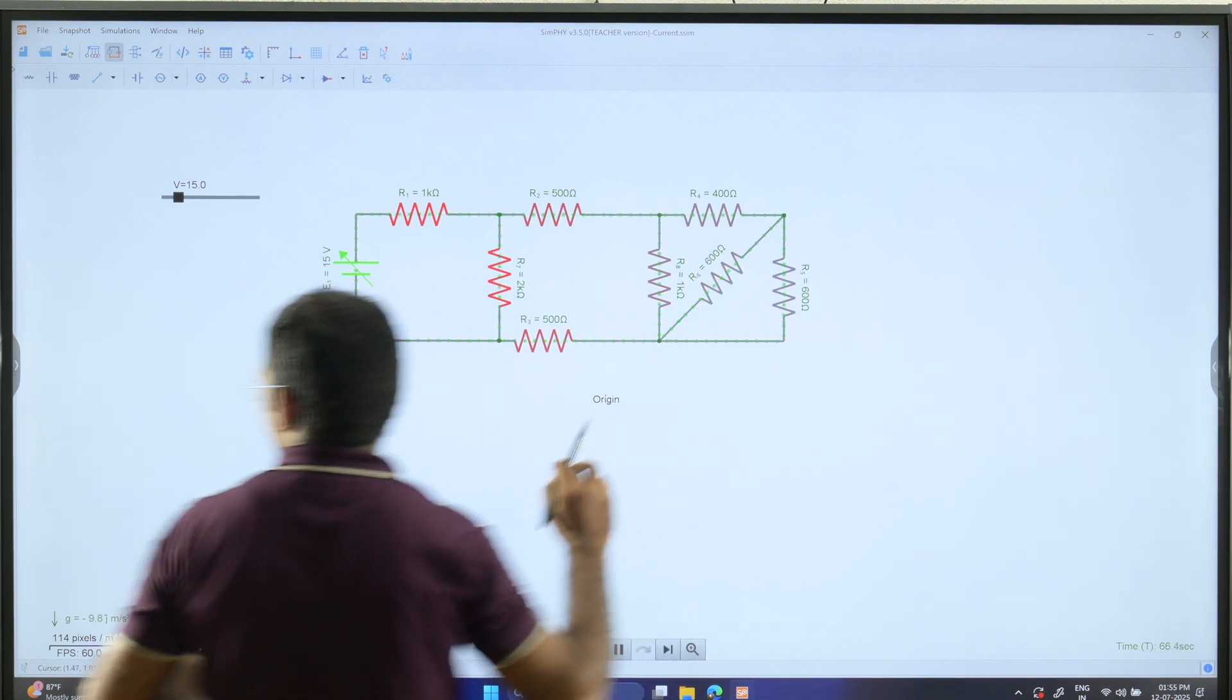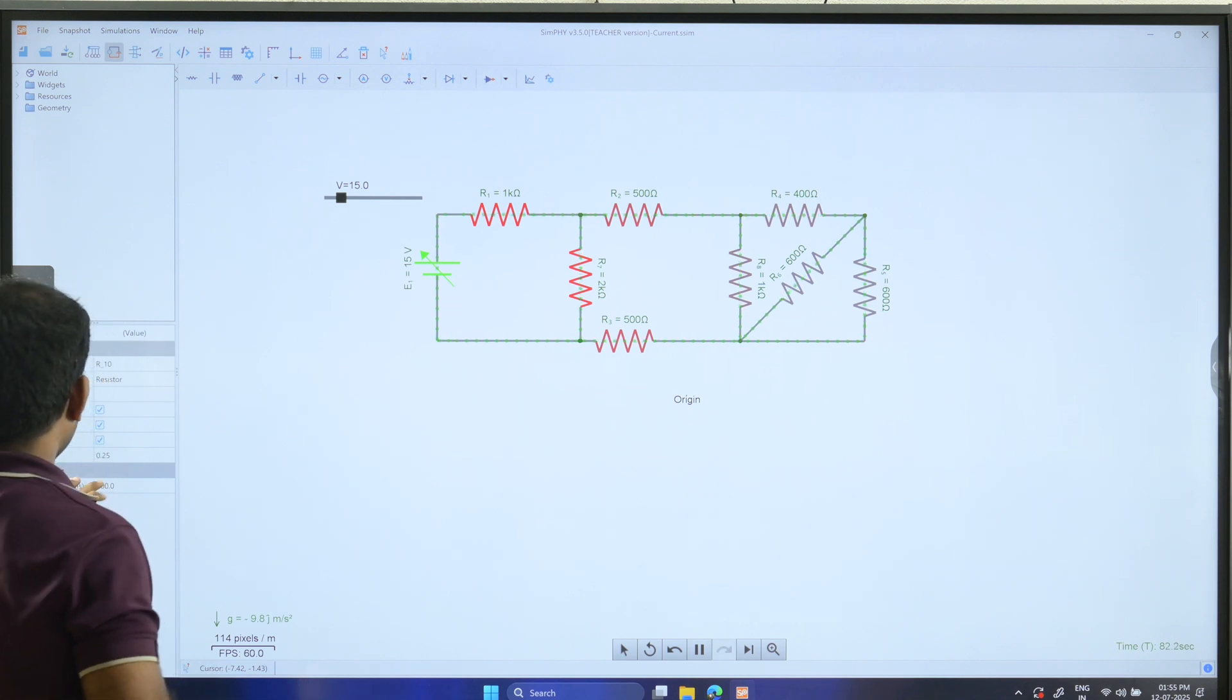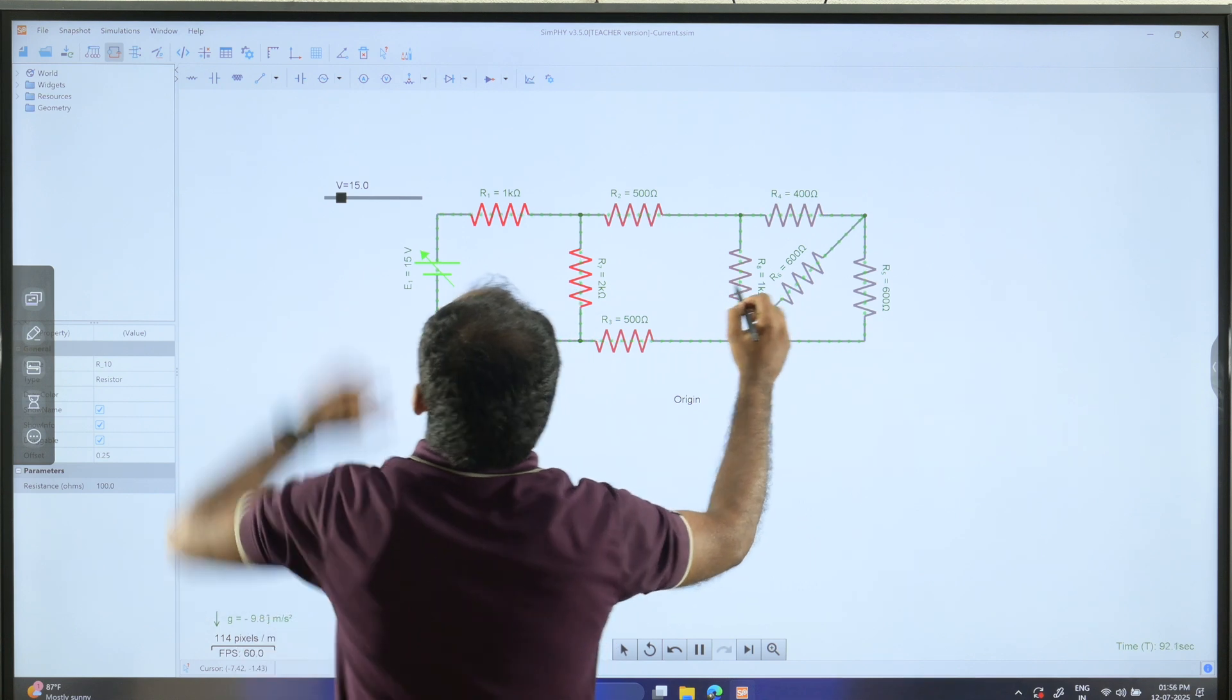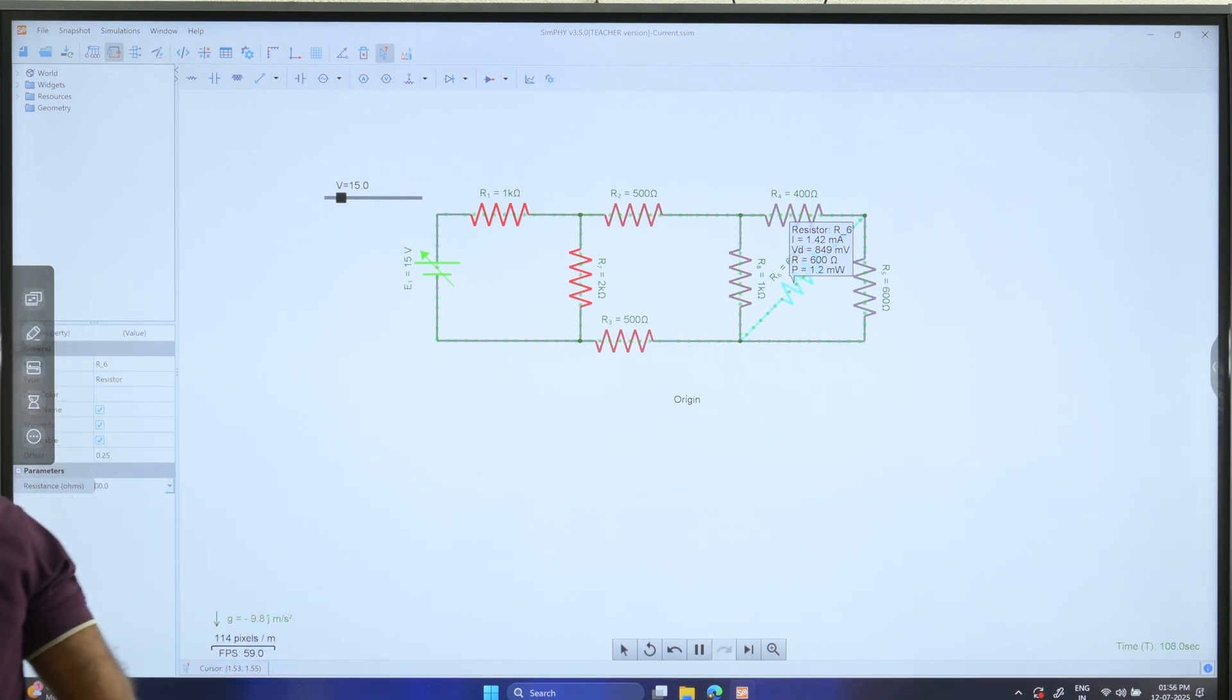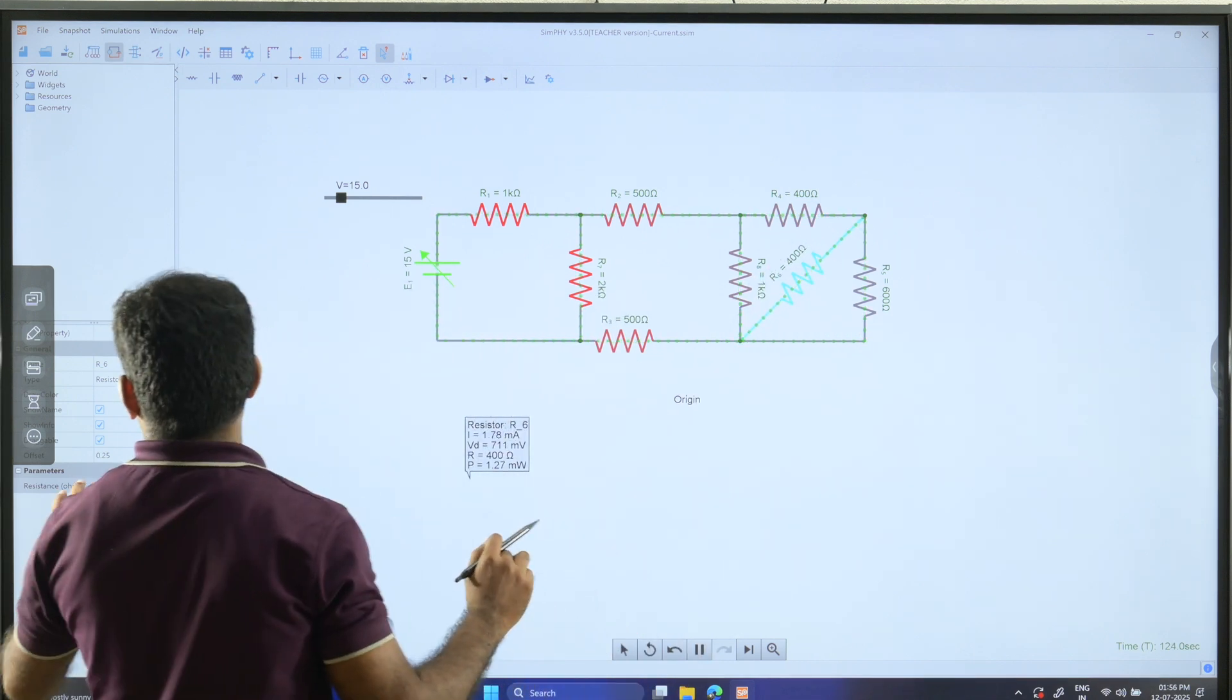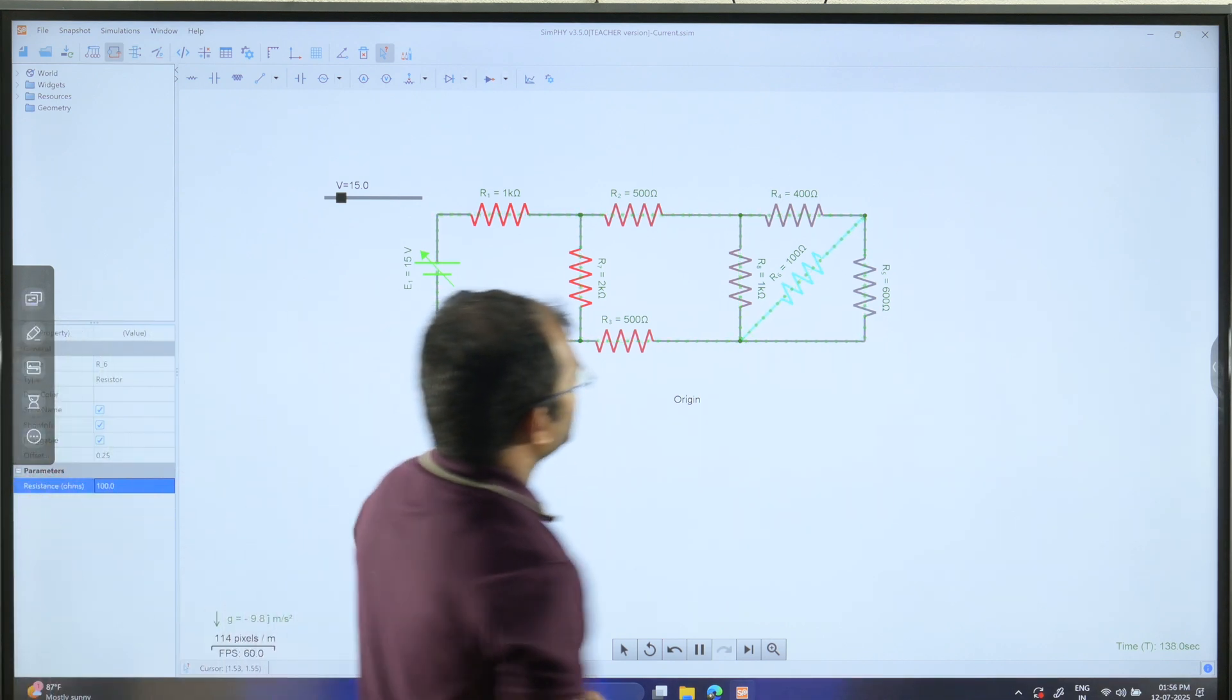If I change the resistance of this particular resistor to a lower value, you can experience that this current will move much faster when compared with 600 ohms.